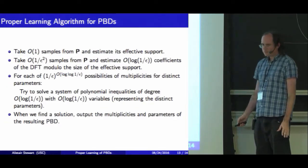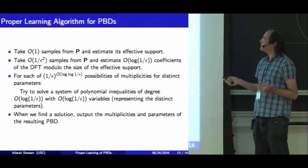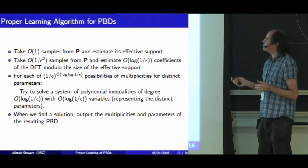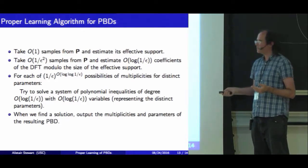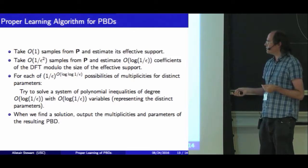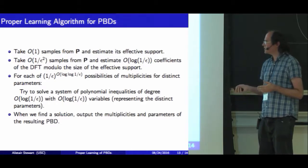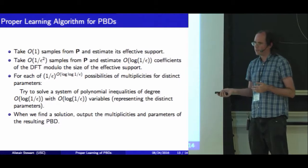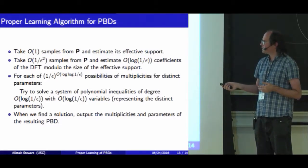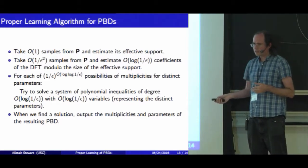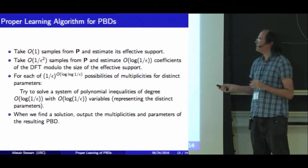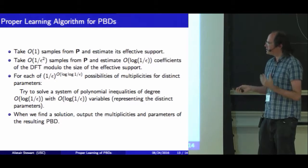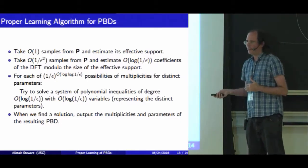So our algorithm is: we take samples to estimate the effective support, calculate the discrete Fourier transform at these log(1/ε) points, and then iterate over our multiplicities. For each, we solve a system of polynomial inequalities with log(1/ε) free variables and degree log(1/ε). Using Renegar's algorithms, we can solve this in (log 1/ε)^(log 1/ε) time, which is also 1/ε^(log log 1/ε). One of these systems will have a solution, giving us a Poisson binomial distribution close to the original. Notice we have two steps each with running time 1/ε^(log log 1/ε), so it will be quite hard to improve this to polynomial time — we'd have to improve both.